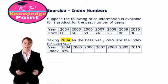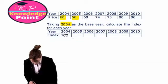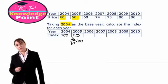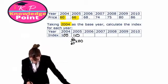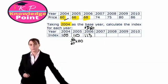We want to calculate the index for 2005. It's just going to be the actual price in 2005 divided by the price in our base year. In 2005 our index will be 66 over 60 multiplied by 100, giving us an index of 110. All we are saying here is that between 2004 and 2005 the price of this product increased by 10%. For 2006, that will be 68 divided by 60 multiplied by 100, giving us 113.